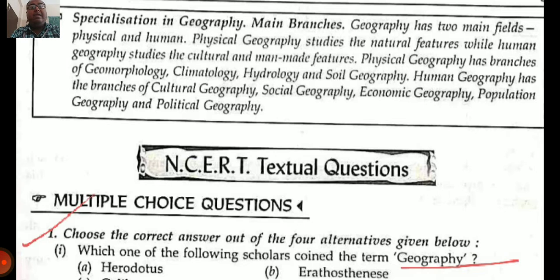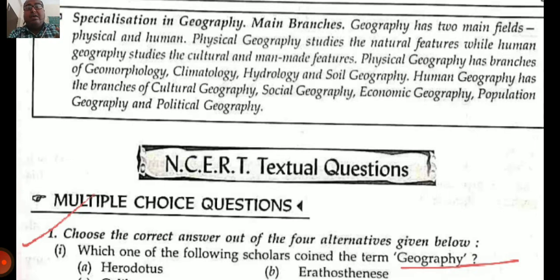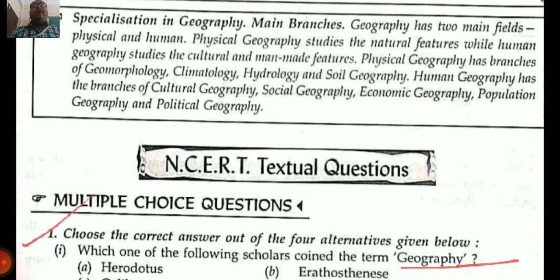Second is Where — where is the mountain, where is the plateau, where is the plain? This is the location-based study. Third is Why — W-H-Y. Why did this mountain originate here? What are the reasons behind it, and what will be the situation in future? We have to apply all these principles and laws whenever we study geography.